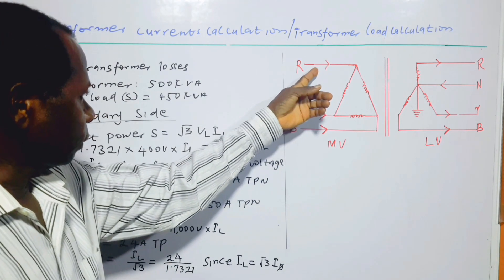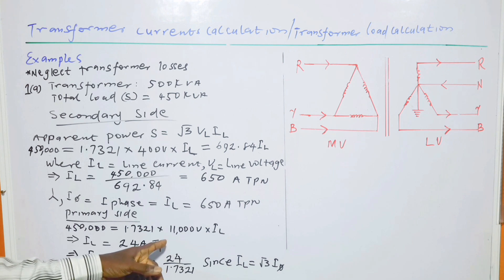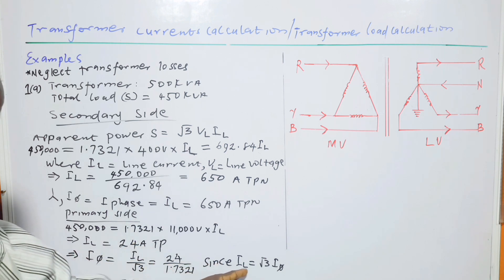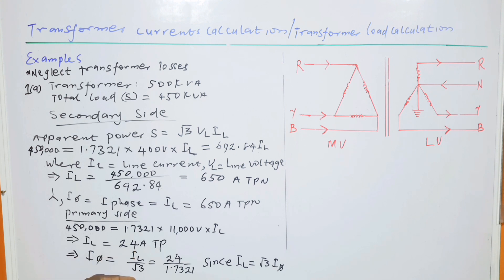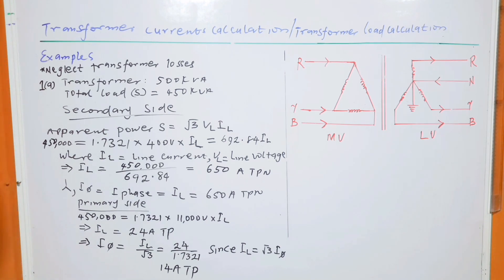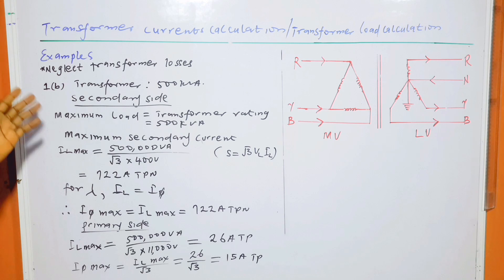We have red phase, yellow phase, and blue phase — three phases, but there is no neutral, so we do not include N. Since the line current is 24 A for delta connection, I_line = √3 × I_phase, so I_phase = I_line / √3 = 14 amperes, three-phase.